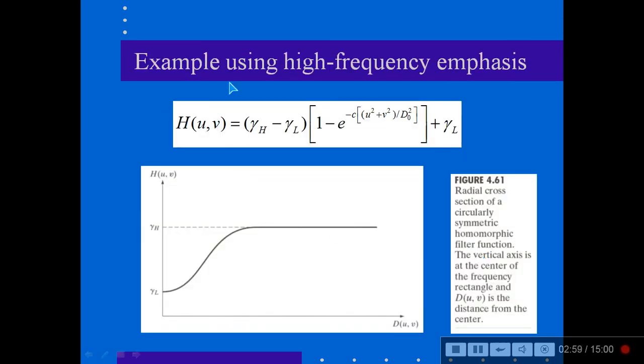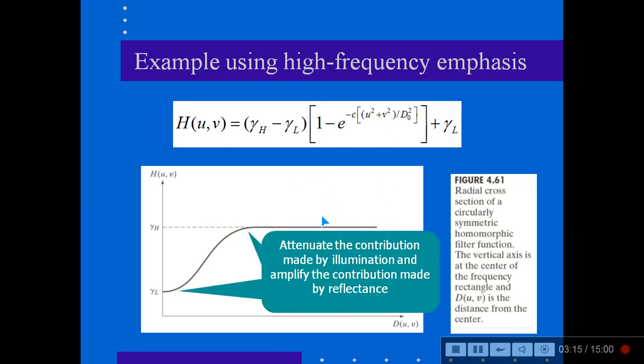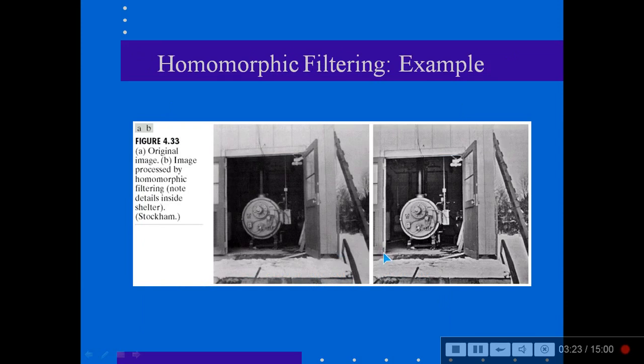So what are the examples of these homomorphic filterization? It is using high frequency emphasis. This is actually the homomorphic filter. So the attenuation, the contribution made by illumination, it amplifies the contribution made by the reflectance.